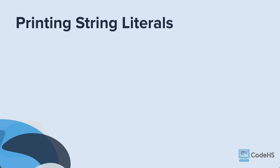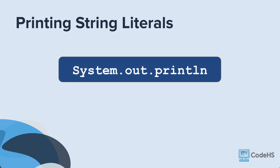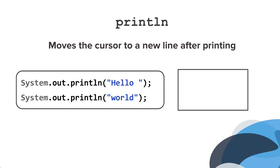Now that you know about literals, let's get back to printing. In this lesson, we'll focus on printing string literals. There are actually two ways to print in Java — both system.out.println and system.out.print display information on the computer screen or console. So far, you have seen the println statement. This command moves the cursor to a new line after printing, which is why when you have two println statements, each string is printed on a separate line.